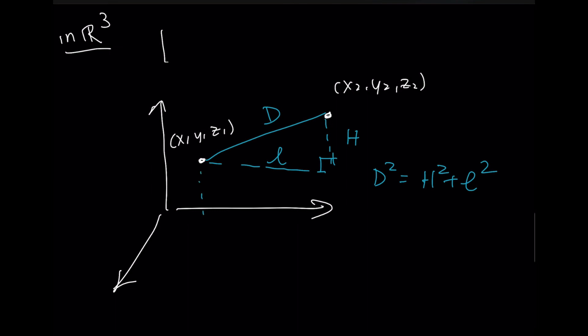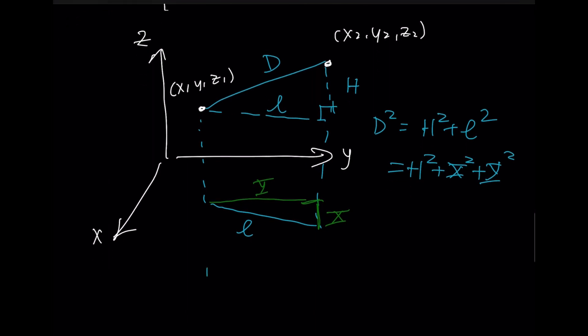You could project that down and there's L and then L is actually formed by another right triangle right here. And then this would be capital X and capital Y and of course I'm being lazy and not putting my axes down. And so this would end up giving you H squared, X squared plus Y squared because you're using Pythagorean theorem again. H is just going to be the difference in height between those two points.